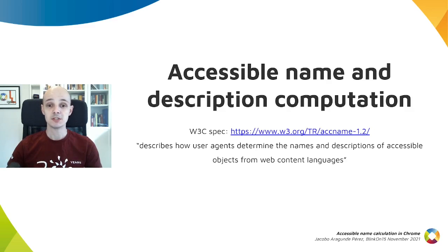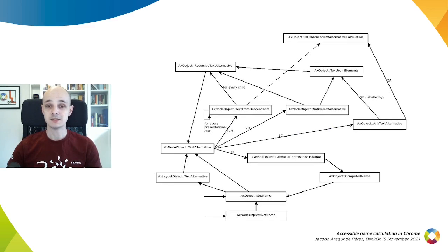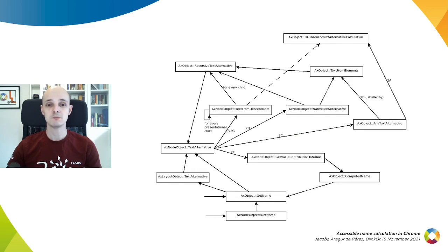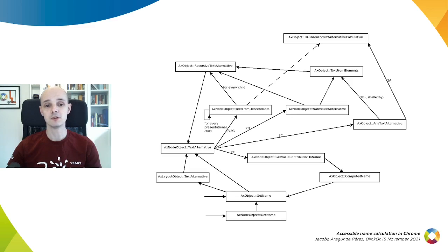Chrome's implementation of the spec is not surprisingly pretty complex too. The logic is spread across 12 functions belonging to different classes, and they call each other creating cycles. It performs different kinds of traversals depending on the information we are looking for.